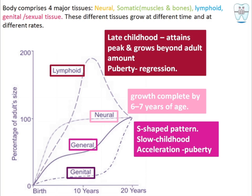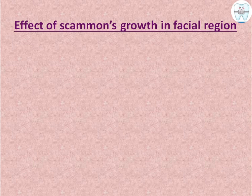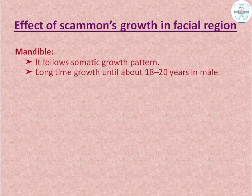Genital organs represent secondary sexual characteristics. They appear at puberty and attain their peak at around 20 years of age; before puberty, growth is stagnant.